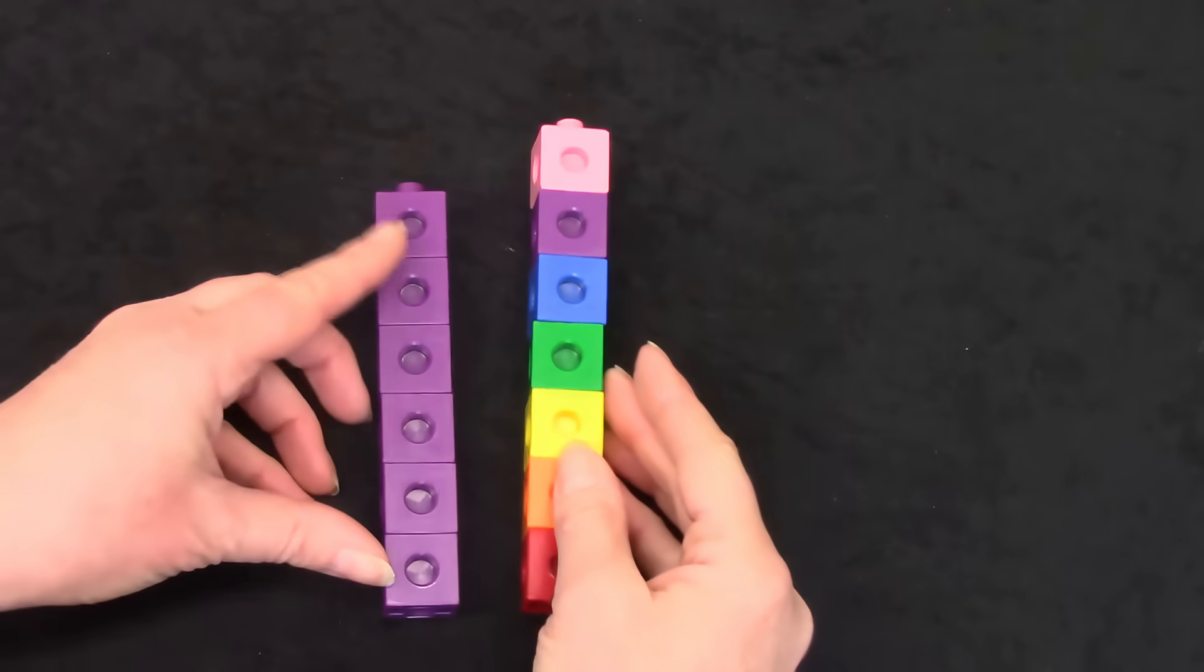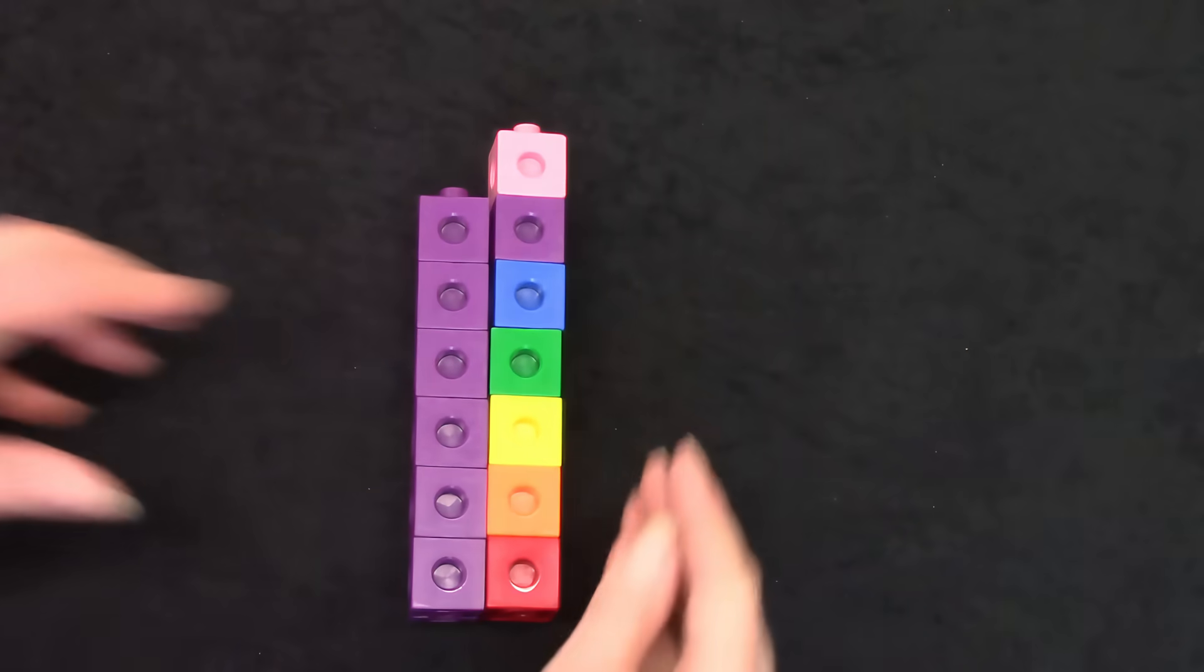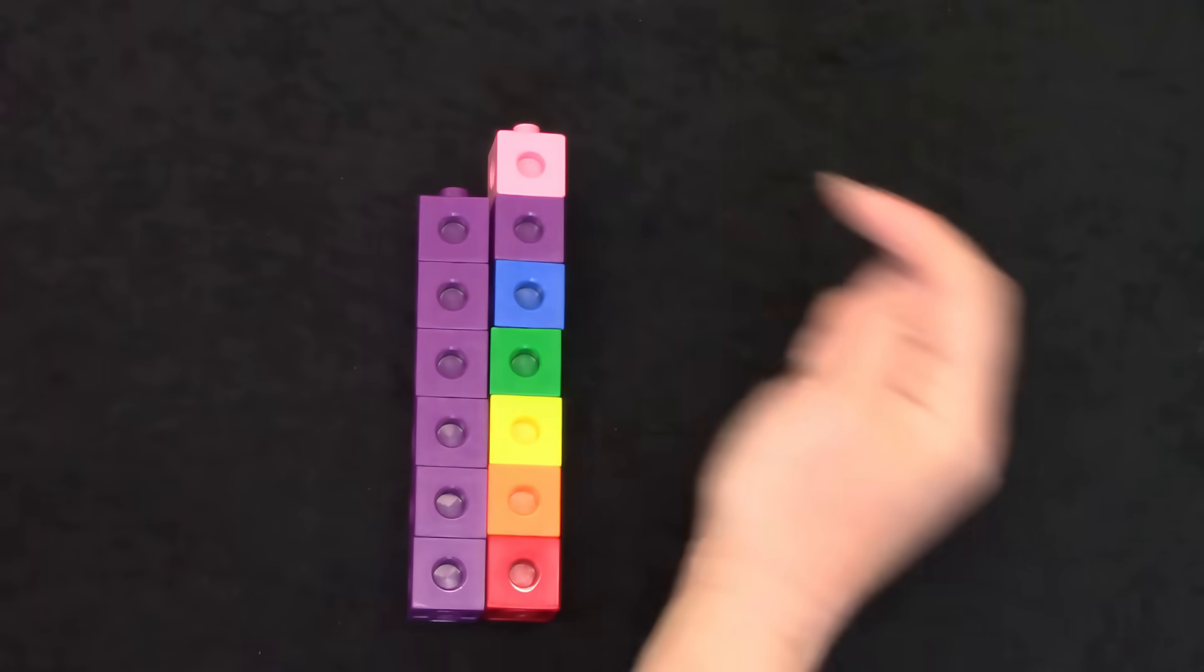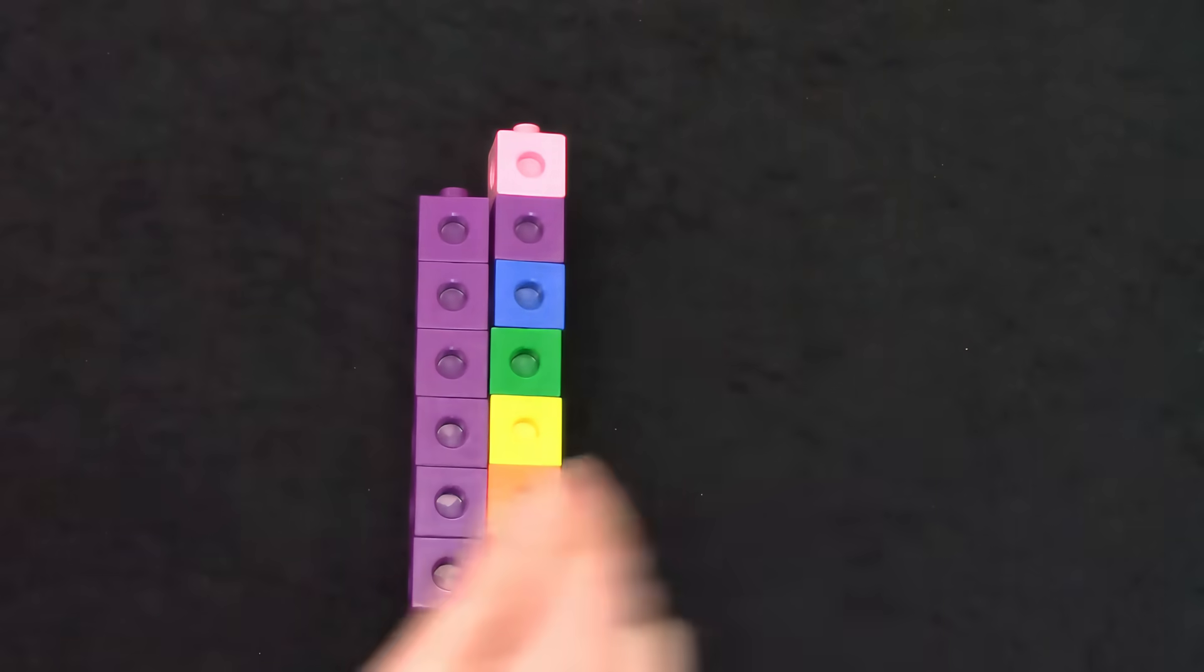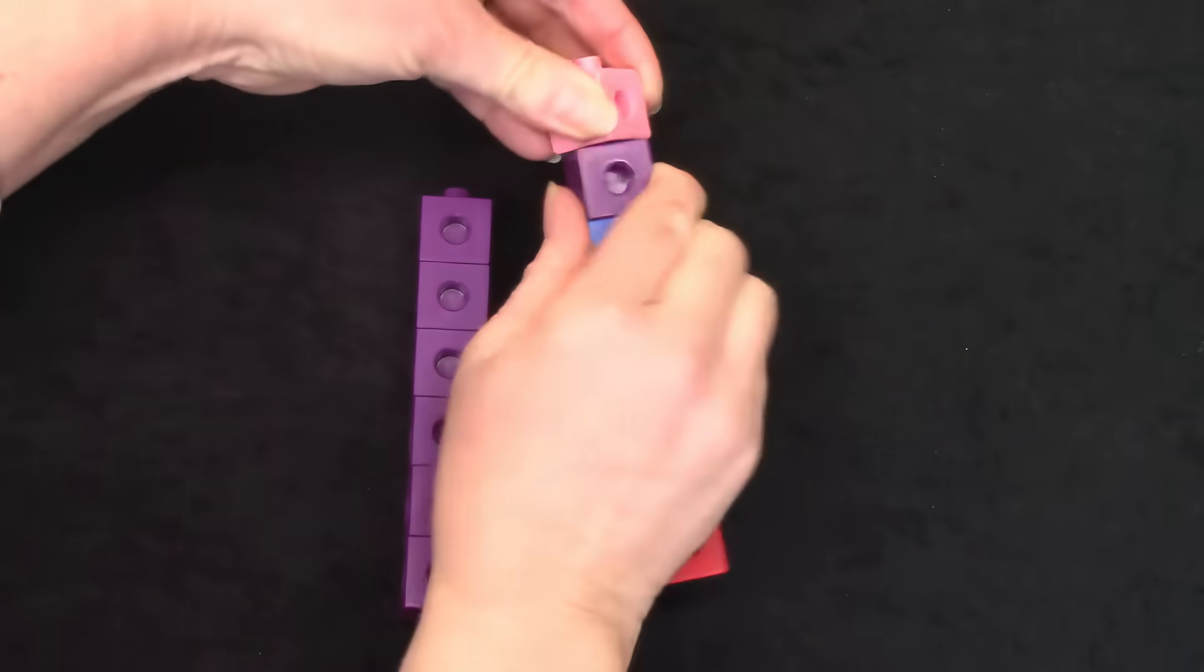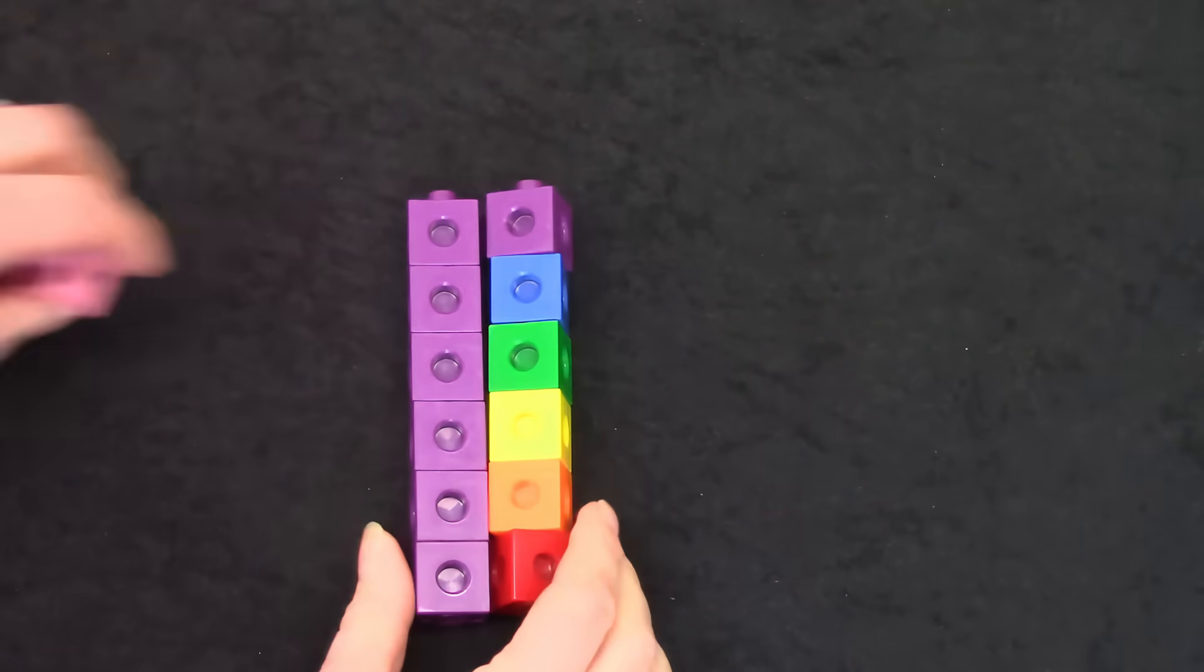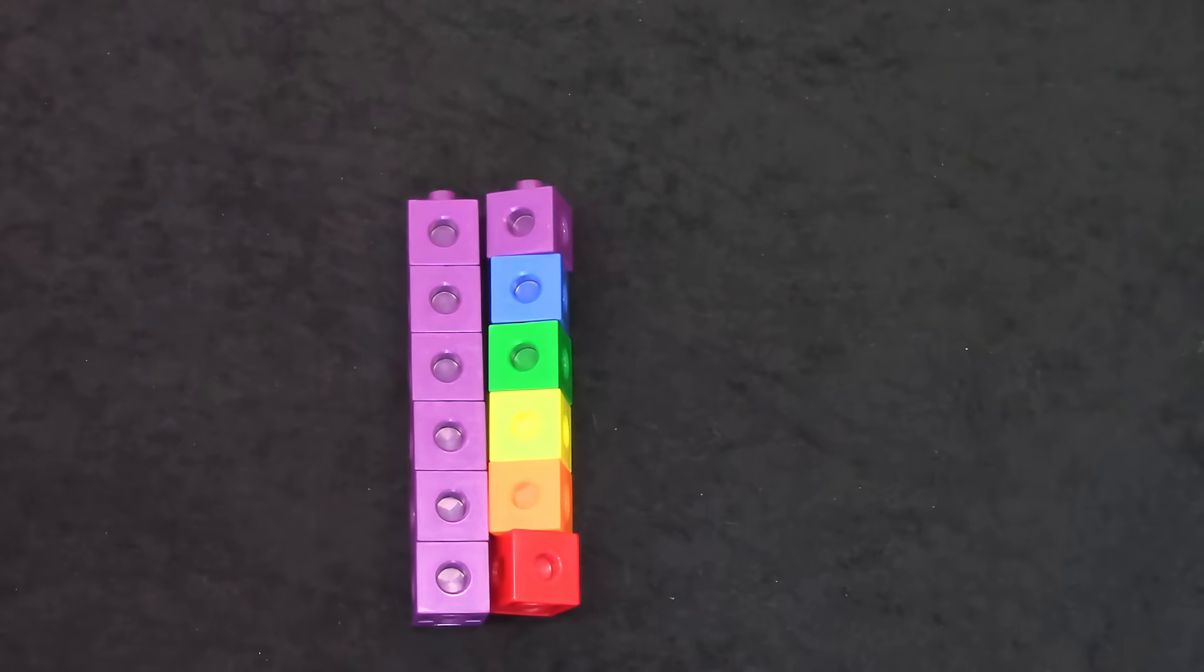We're going to find out how many more. How many cubes do not have partners? It's just one. So 7 is one more than 6. If we take one off they're the same height.